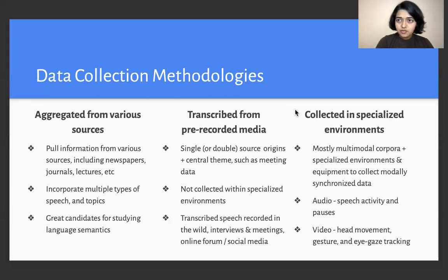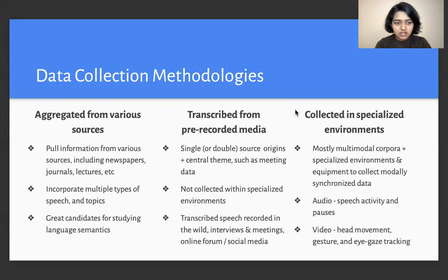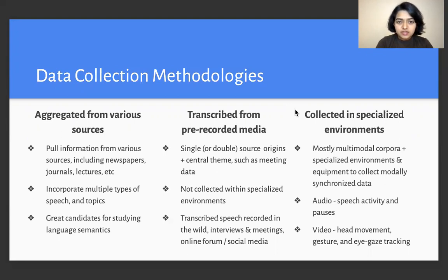For most of these corpora, we are able to classify them into three main categories of data collection methodologies. The first is aggregated from various sources, where the corpus was formed by pulling information from various sources such as newspapers, lectures, meetings, etc. — any kind of data that was already available and was transcribed and put together into a larger corpus. They incorporate multiple types of speech and topics, and have been great candidates for studying language semantics. The second main category is those transcribed from pre-recorded media, which come from single or multiple source origins and follow a central theme such as meeting data.